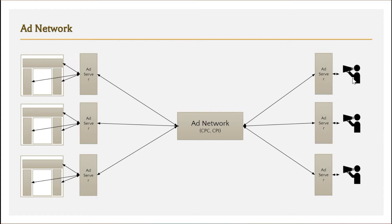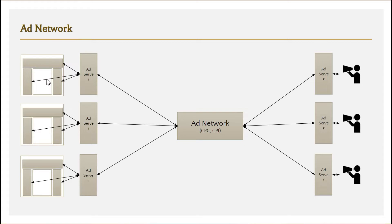The marketer says to the ad network: I want to run these ads with creatives of different sizes — you decide where to display them, but I want to reach the audience belonging to New Delhi. The ad network, based on the user's location, checks: if a particular user logs into site one from Bangalore, that condition is not satisfied, so the ad is not shown. But if there is another user who logged in from New Delhi, then the condition is satisfied.